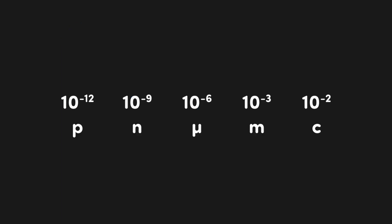First up, we have pico, which is represented as p and is equal to 10 to the negative 12. Next is nano, represented as n and is equal to 10 to the negative 9. This one is easy to remember since n is the first letter of 9. Next up, we have micro, represented by this symbol here, which is equal to 10 to the negative 6. I remember this one because the micro symbol kind of looks like an upside down 6.